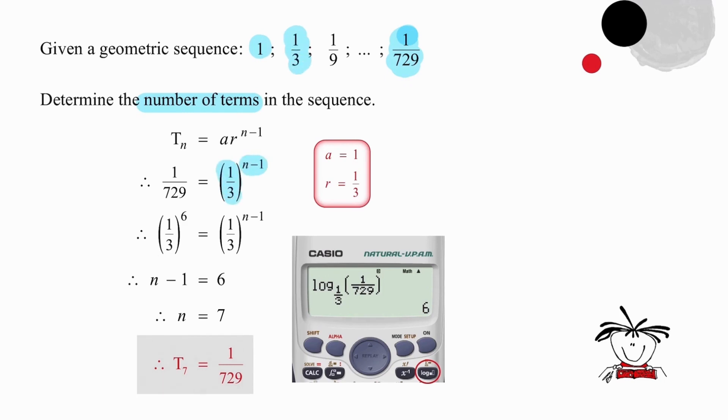So choosing the correct log function, you simply type in the base of the log and the number that you are taking the log of, and that will give you a result of 6. So if n minus 1 equals 6, then n equals 7, and that tells us that T_7 has a value of 1 over 729.